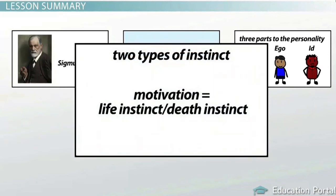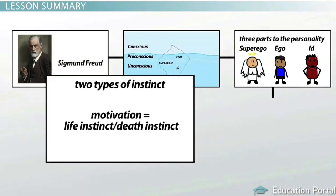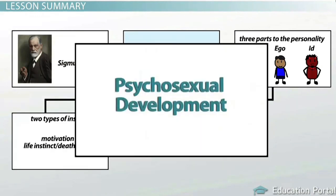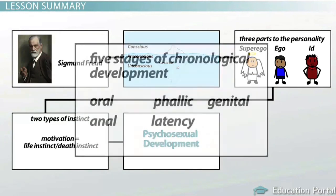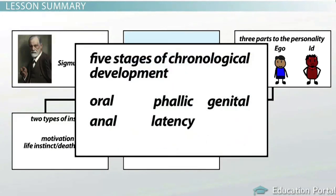Behavior is motivated by instinct. There are two types of instinct described by Freud: life instincts and death instincts. Freud also formed a developmental theory he called psychosexual development, which includes five stages of chronological development.